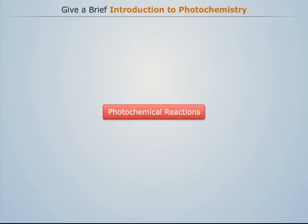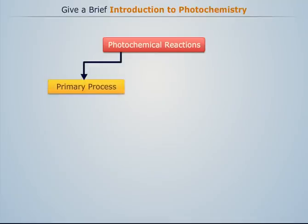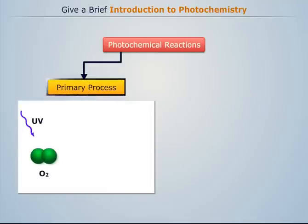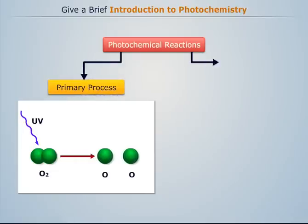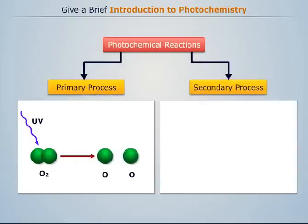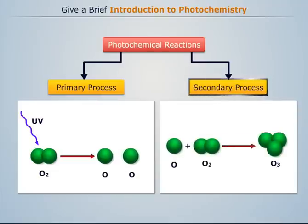All photochemical reactions take place in two stages. In the first stage, known as the primary process, the reacting molecule undergoes activation by absorption of light. In the second stage, known as the secondary process, the activated molecules undergo a photochemical change.